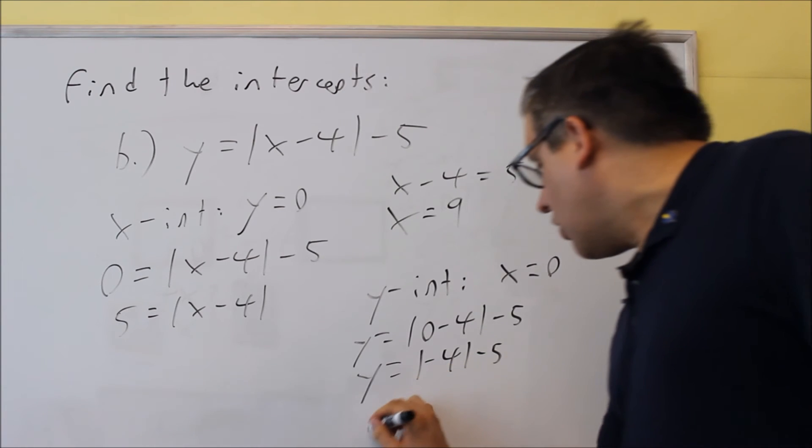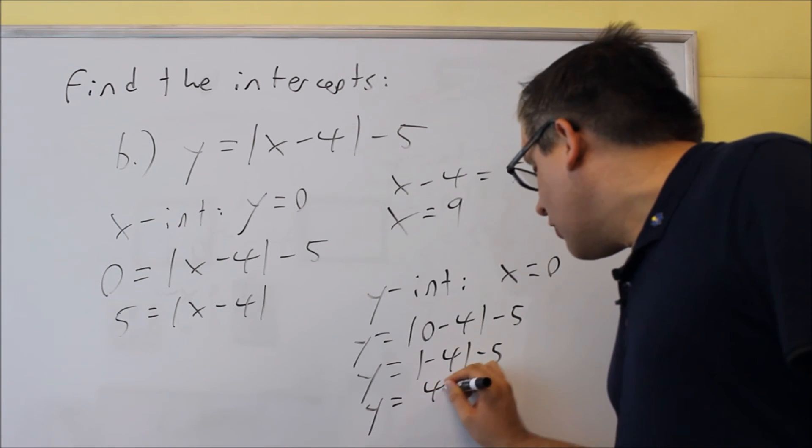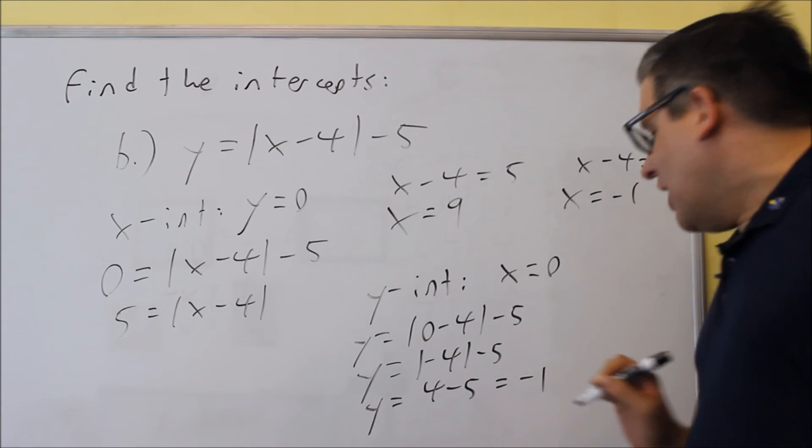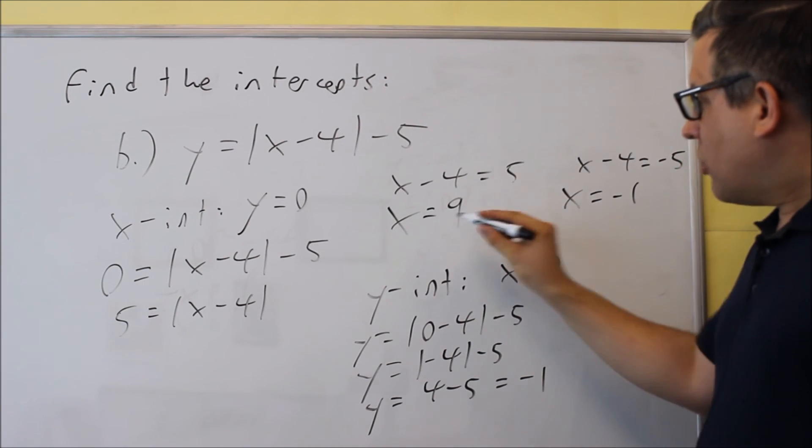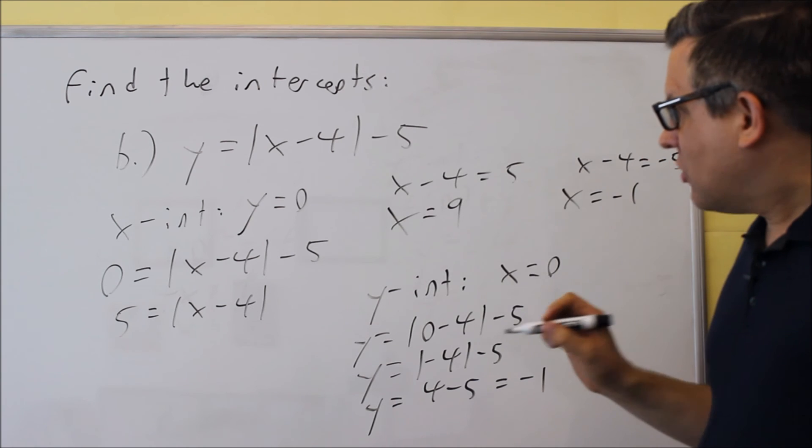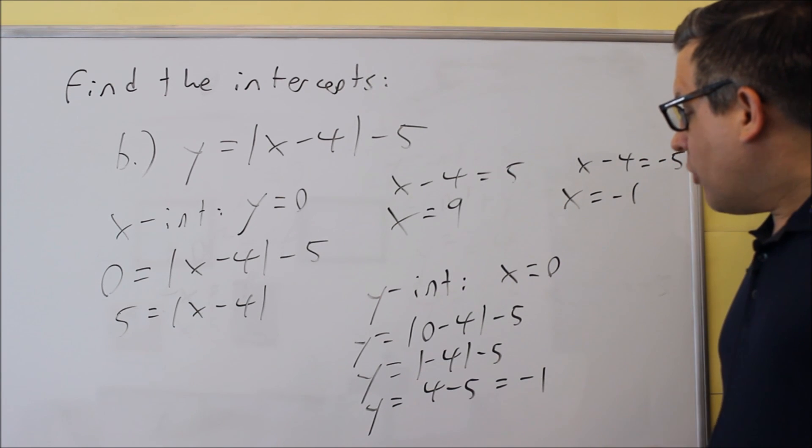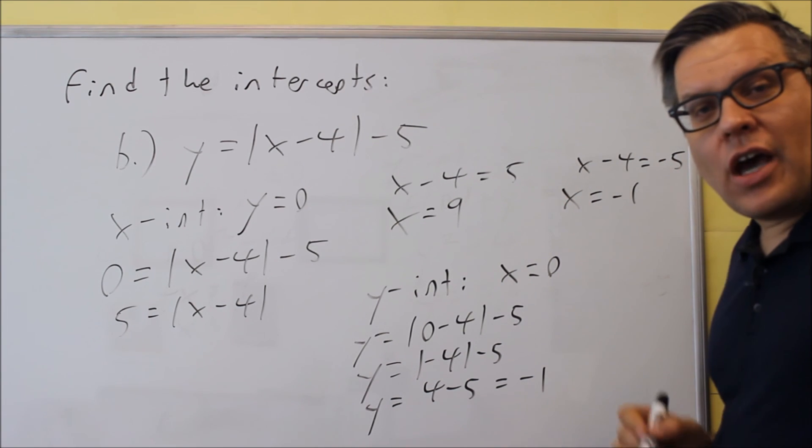So when you work that out, that's going to give you positive 4 minus 5. And then if we work that out, we get negative 1. So for this one, this one has two x-intercepts, 9 and negative 1. And we have one y-intercept, which is going to be at negative 1.